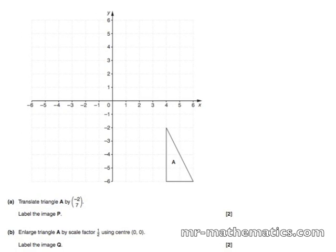We are going to translate object A by the vector (-2, 7). We will choose a vertex and move it 2 to the left and 7 up.